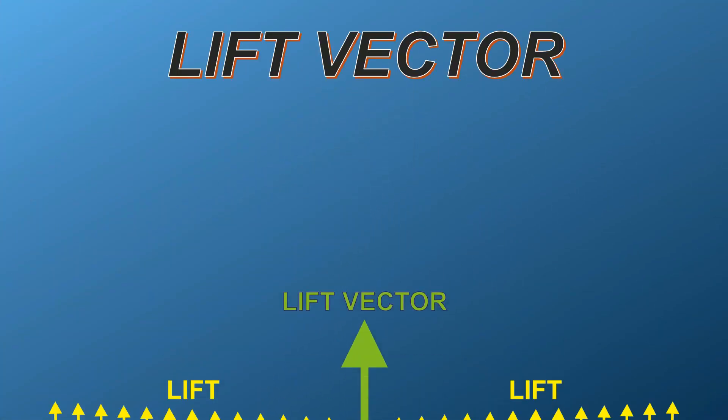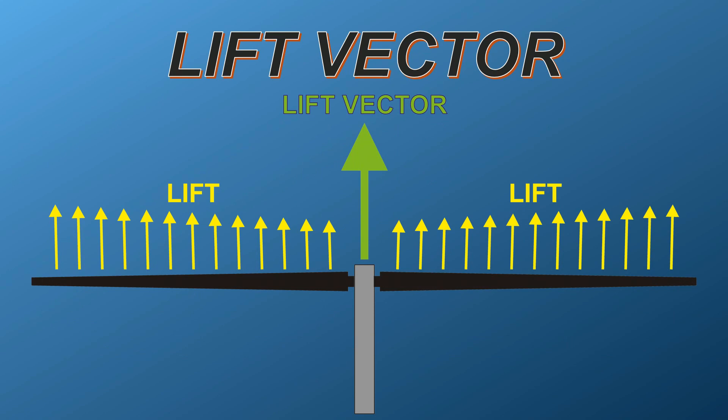As a rotor blade is an aerofoil, it produces lift all along the surfaces of the blade. However, for ease of understanding, particularly as there are multiple numbers of blades, the lift produced on a rotor blade system is calculated to act at one point. This is usually the center of the rotor shaft, and the lift produced is called the lift vector. The pilot has to be able to control this lift vector to control the helicopter.